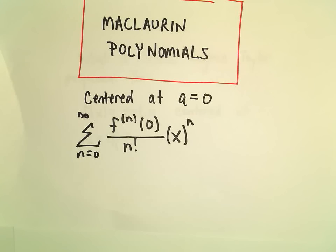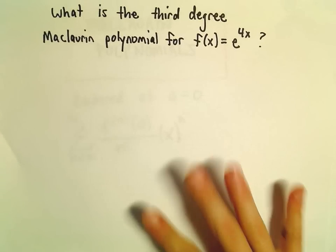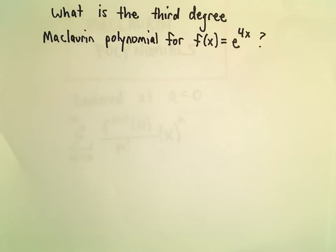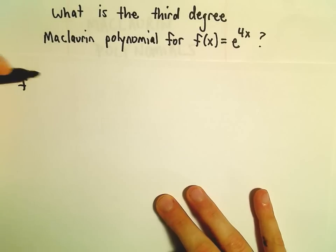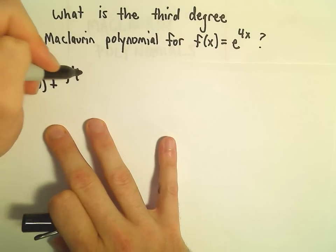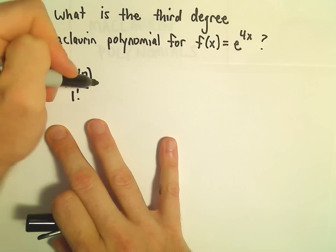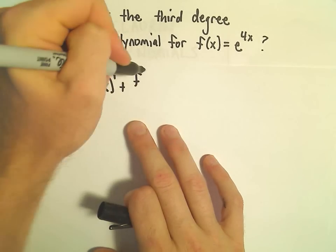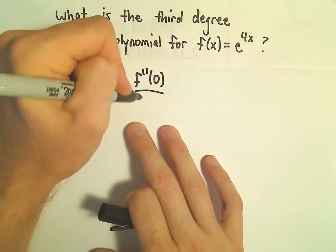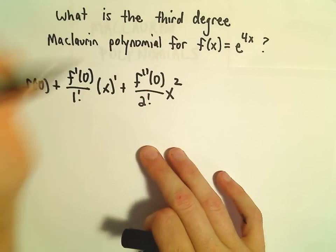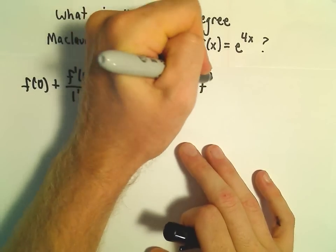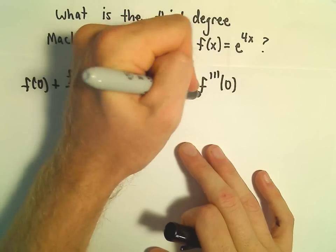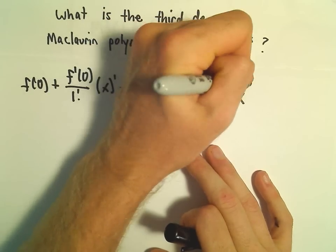In this example we're going to find the third degree Maclaurin polynomial for f(x) = e^(4x). I'm going to write it out generically. We'll have f(0) + f'(0)/1! times x + f''(0)/2! times x² + f'''(0)/3! times x³.